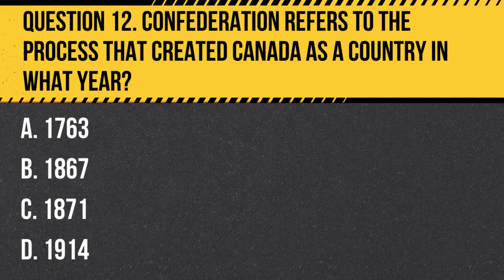Question 12. Confederation refers to the process that created Canada as a country in what year? A. 1763. B. 1867. C. 1871. D. 1914.